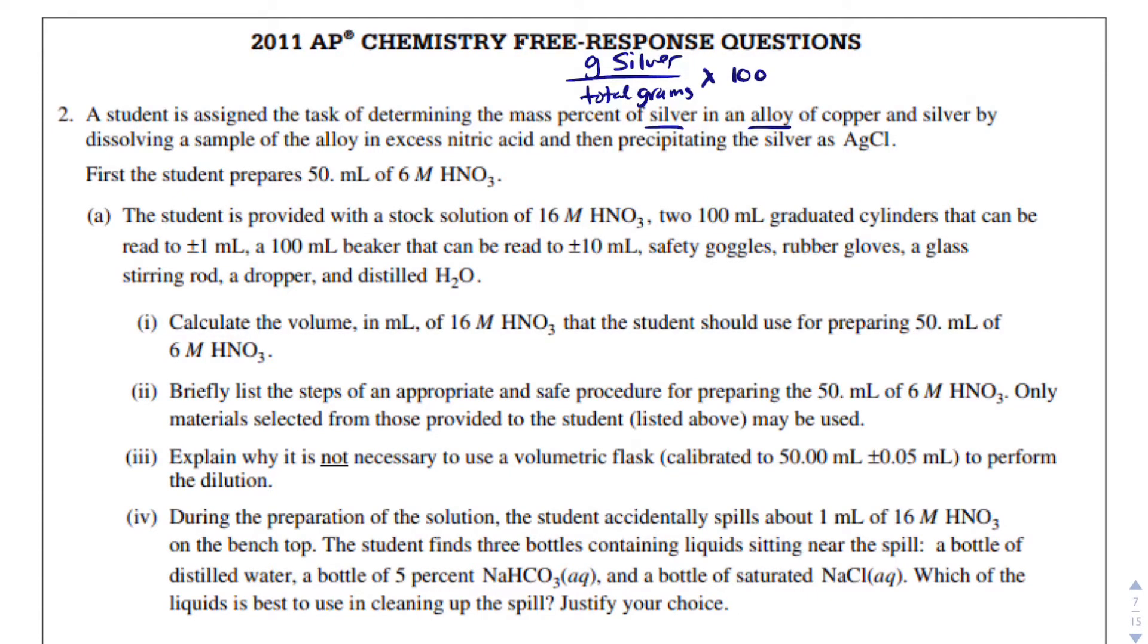They're dissolving the sample in excess nitric acid and then figuring out how much silver is there by a precipitate of silver chloride. First, the student prepares 50 milliliters of 6 molar nitric acid. The student is provided with a stock solution of 16 molar nitric acid, two 100 milliliter graduated cylinders that can be read to 1 milliliter, a 100 milliliter beaker, safety goggles, rubber gloves, a glass stirring rod, a dropper, and distilled water. Notice these are in parts, so they're going to be somewhat related.